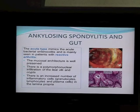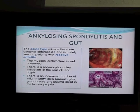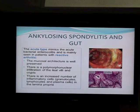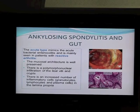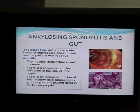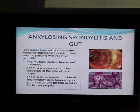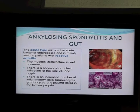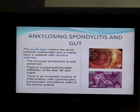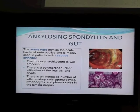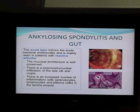The acute type typically presents in a more robust way — patients have much more symptoms. We see it in patients with reactive arthritis. If we do histology, it is almost indistinguishable from acute enterocolitis due to various infections. This is typically seen in patients with reactive arthritis, and this particular morphological picture can persist for years and years — it doesn't disappear.